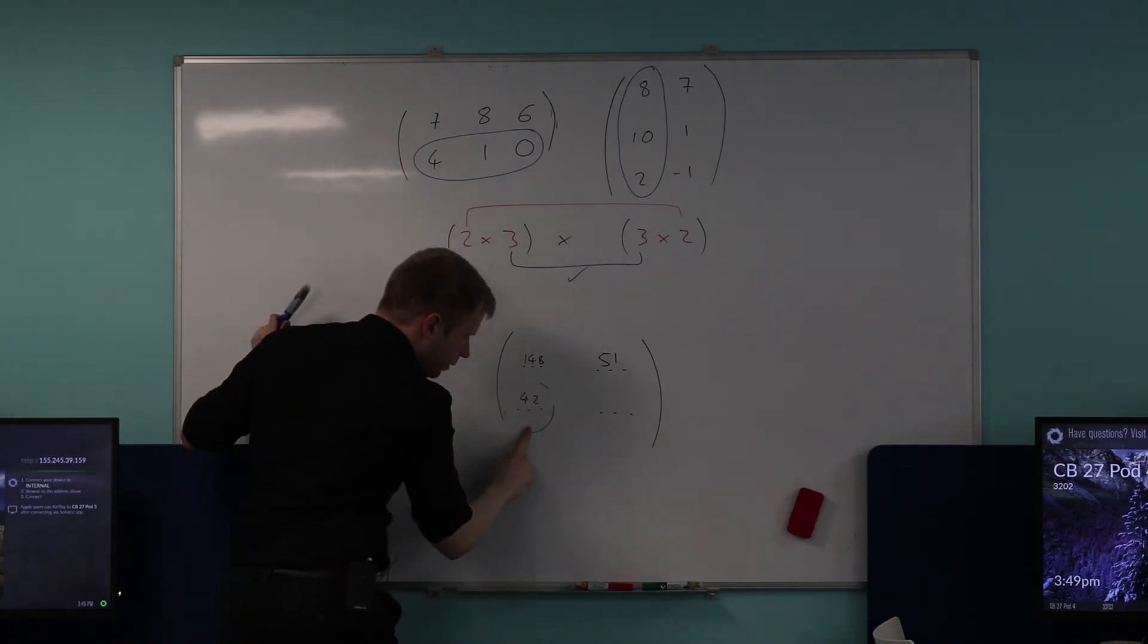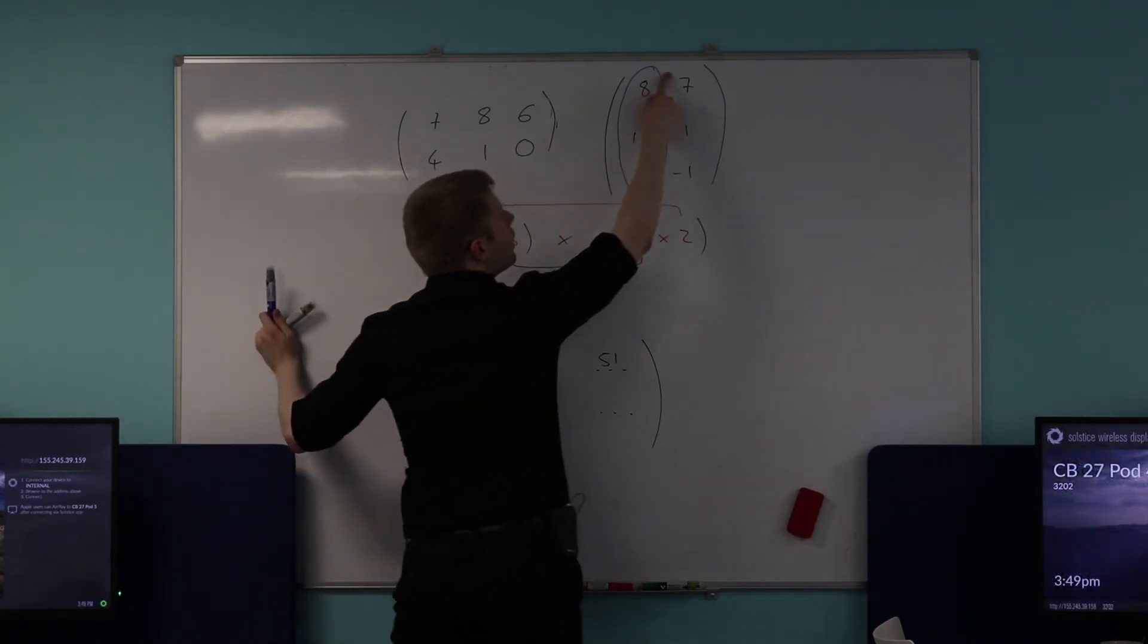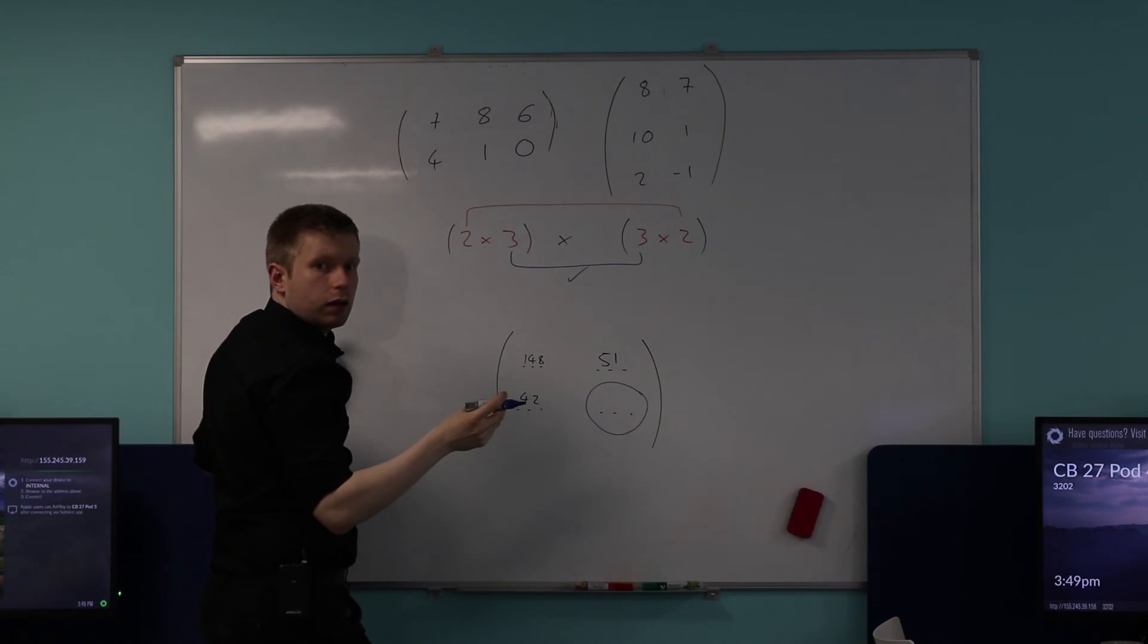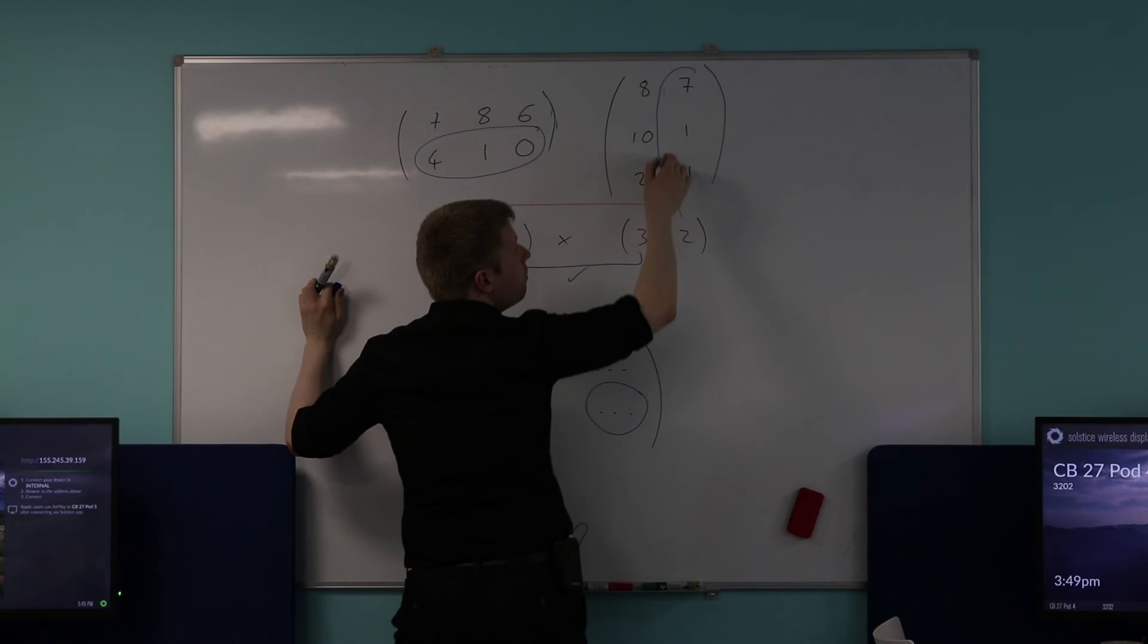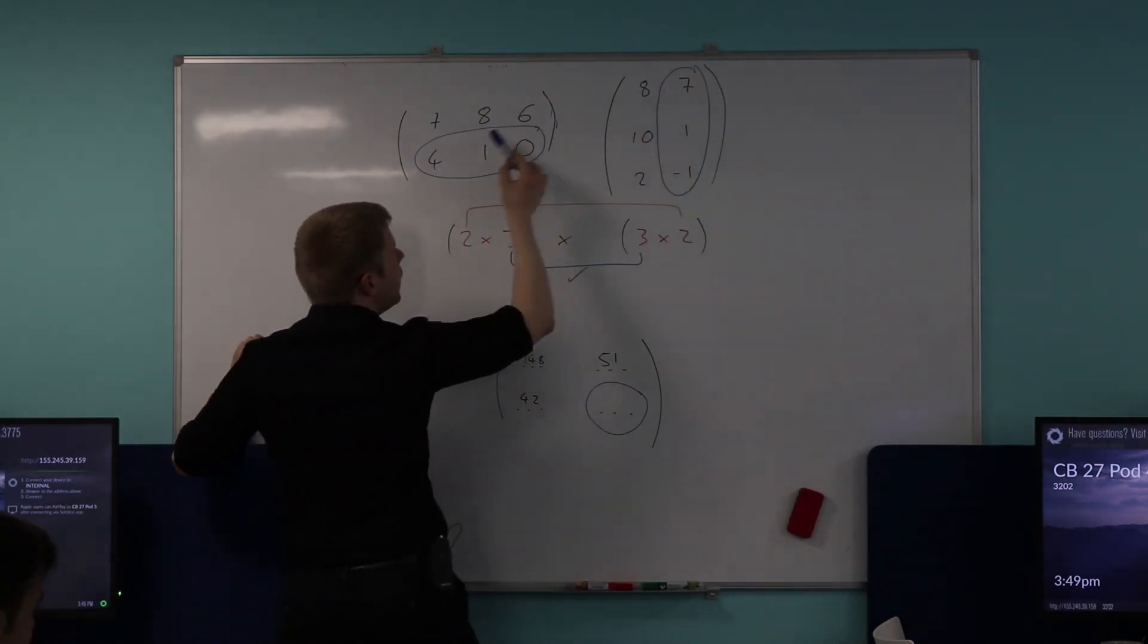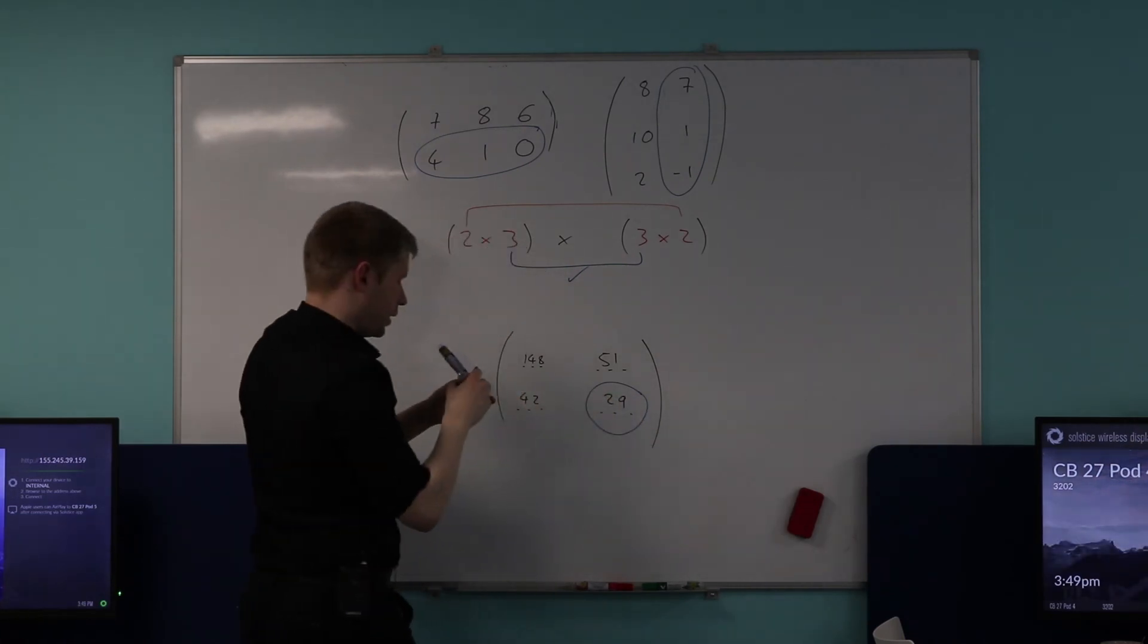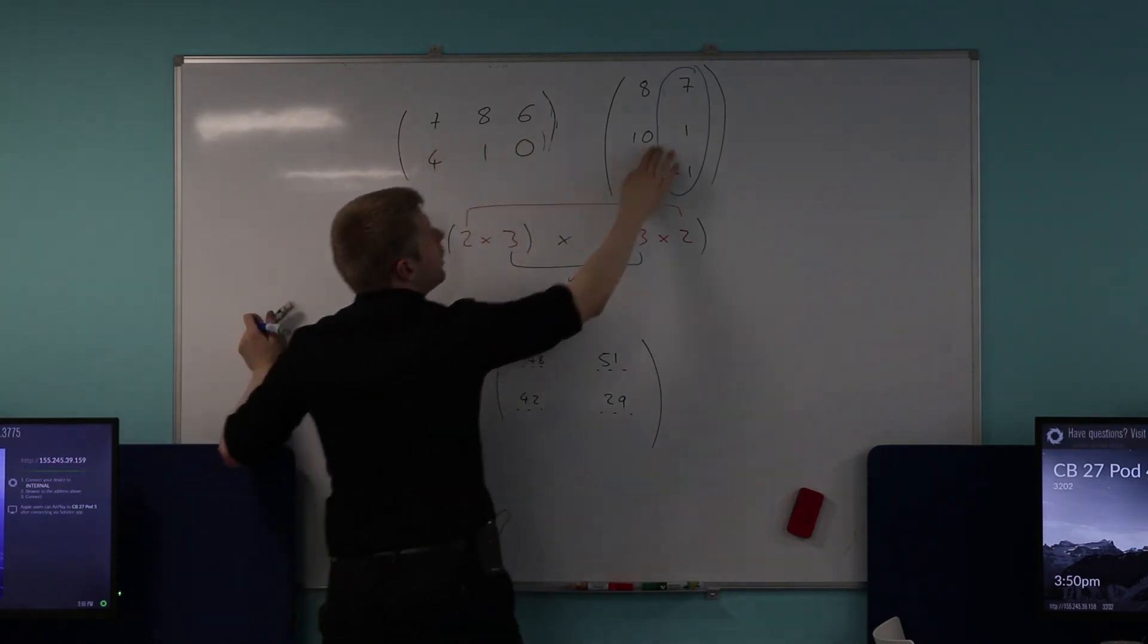Okay, good. And then finally, let's go for this element down here. So let's get rid of that and get rid of that. Okay, so this element here is in which position? Yeah, good. So second row and second column, which means to calculate this element here, I do four times seven, add one times one, add zero times negative one, which is, finish it off for me. 29. There you go. Okay, so get rid of that now. Get rid of that. And get rid of that.